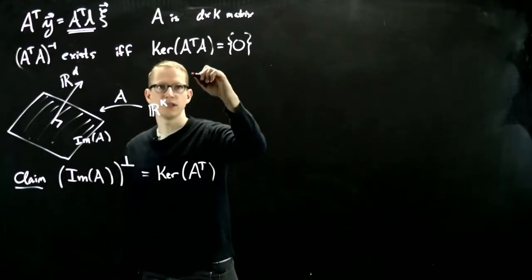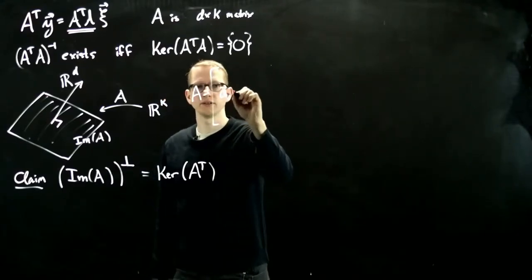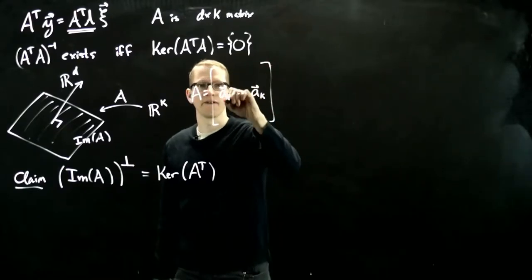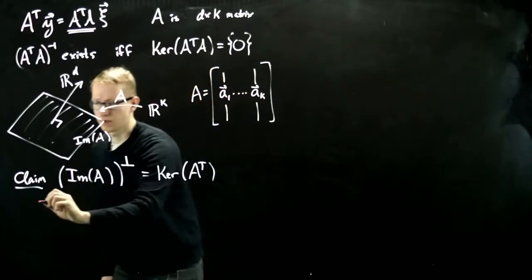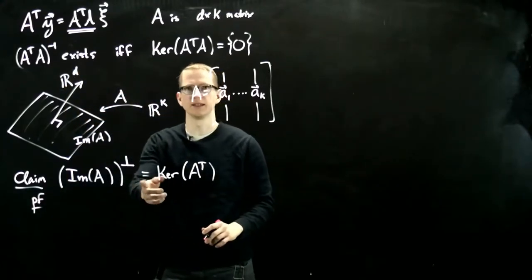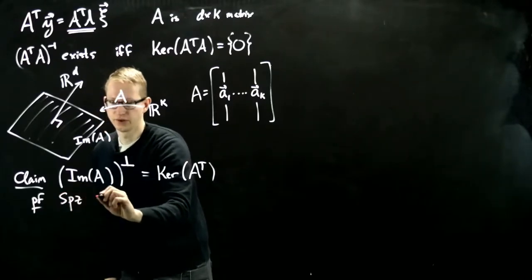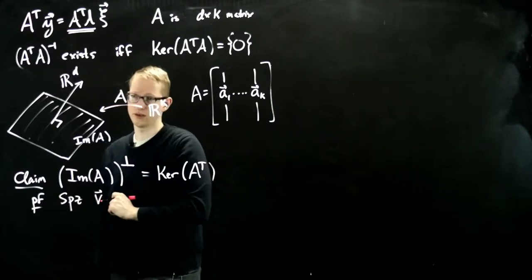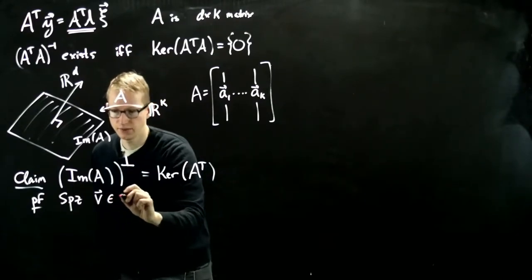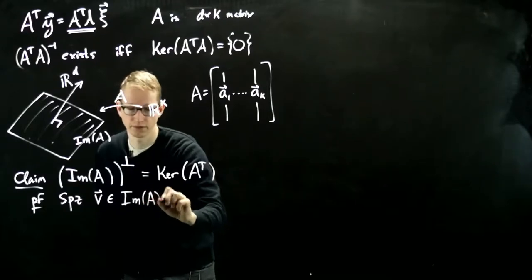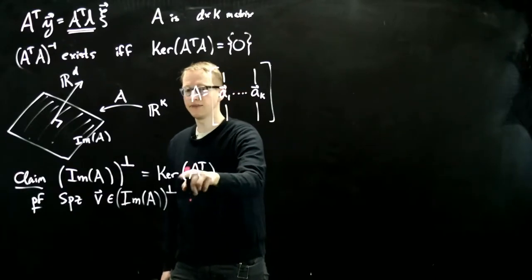So how do we see this? Let's visualize A as a matrix of vectors, so A1 through AK. And when we take the transpose, these columns just become the rows. So we'll do this proof just by showing that one is contained in the other. So suppose that the vector V is an element in the orthogonal complement, perpendicular to the image of A.